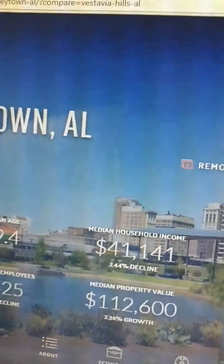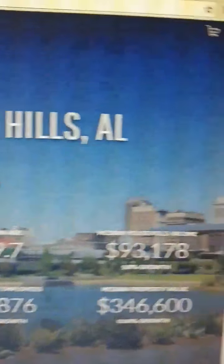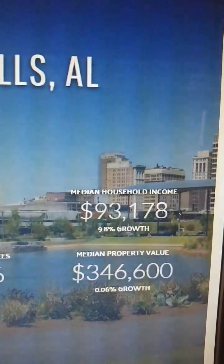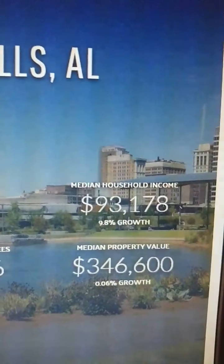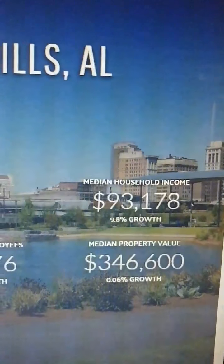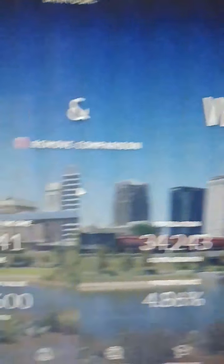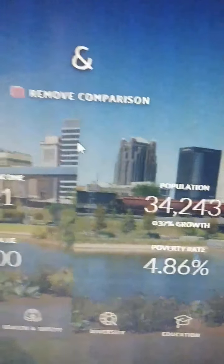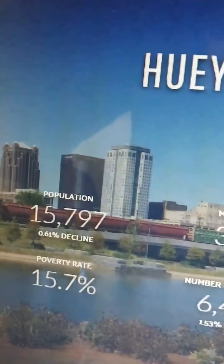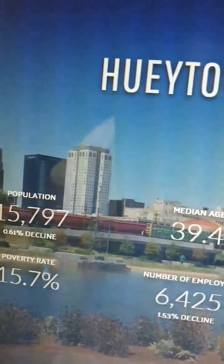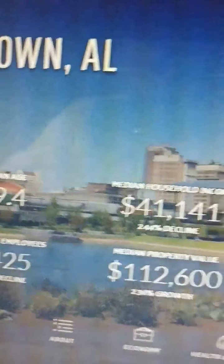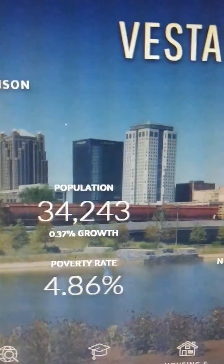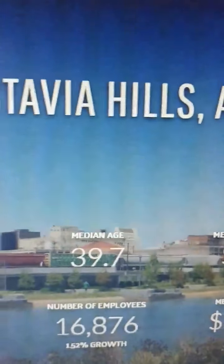Come over here to Vestavia. Look at the poverty rate — it dropped to 4.86%. Hueytown's was 15.7%. Vestavia has all the amenities. The average age is 39.7. Median household income is $93,178. The median property value is $346,600. That median household income reduces the poverty rate well below the national average of 12%.